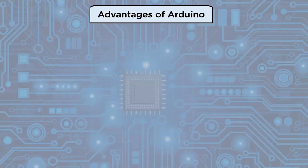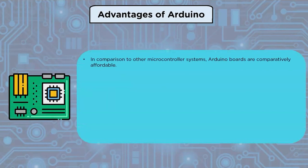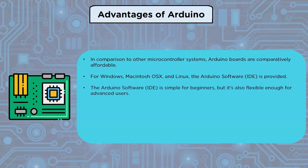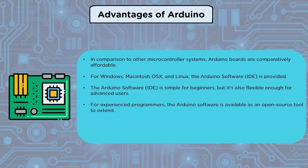Advantages of Arduino: Compared to other microcontroller systems, Arduino boards are relatively affordable — even the cheapest version can be assembled by hand, and pre-made Arduino modules cost less than $50. The Arduino software IDE is provided for Windows, Mac OSX, and Linux, whereas the vast majority of microcontroller systems are Windows-only. The software is simple for beginners but also flexible for advanced users. For experienced programmers, the Arduino software is available as an open source tool, and C++ libraries are available for those who want to learn more.